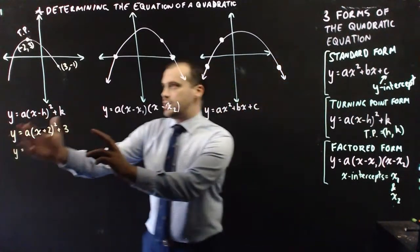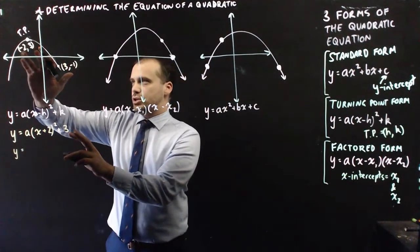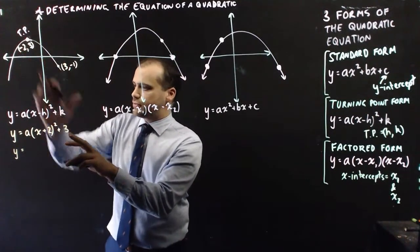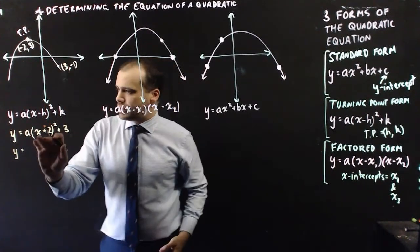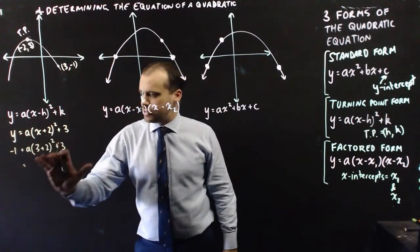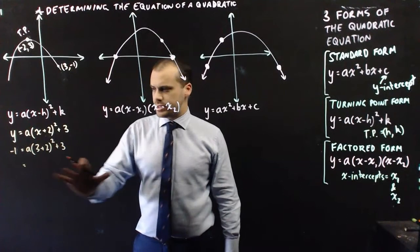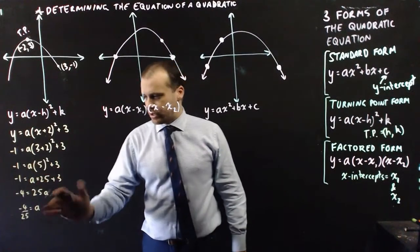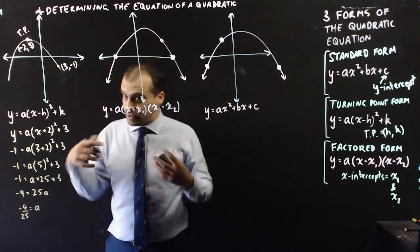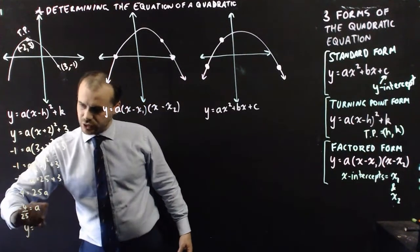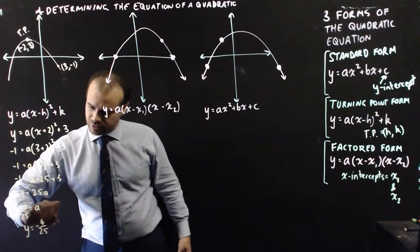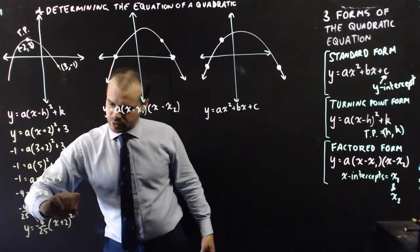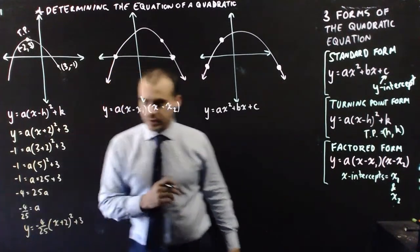Going back to the turning point example — if I had a specific turning point and a specific extra point, I sub in the turning point, making sure the negative 2 becomes positive 2, then sub in the other point. I now have the a value hanging out by itself with everything else as numbers. Working towards solving for a, I find that a is equal to negative 4 over 25. Therefore the equation of the quadratic is y equals negative 4 over 25 times (x plus 2) squared plus 3.